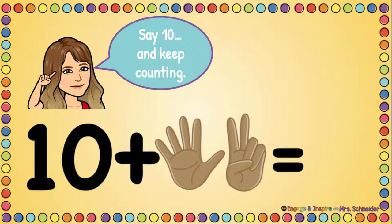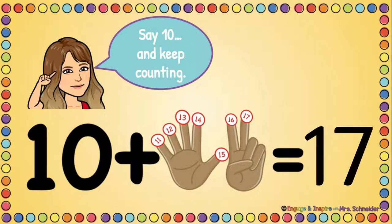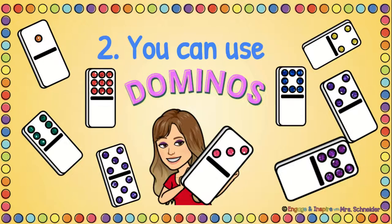So say here we have the problem 10 plus 7. I want you to say out loud, say 10 and then keep counting on. Ready? 10, 11, 12, 13, 14, 15, 16, 17. 10 plus 7 is 17.